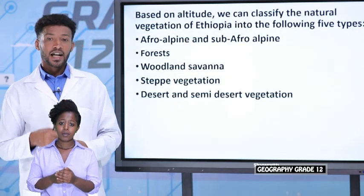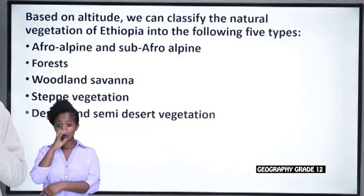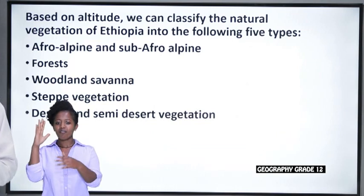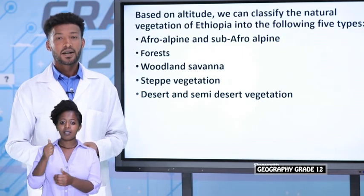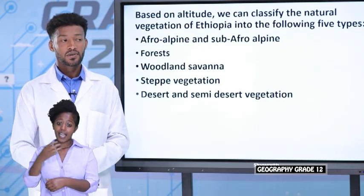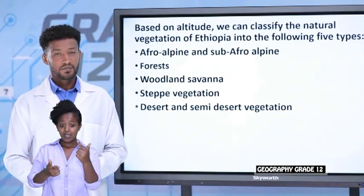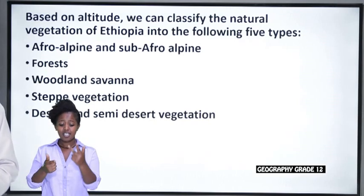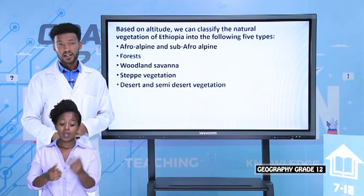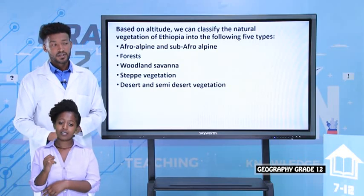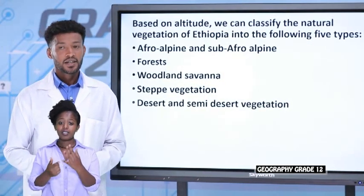Based on altitude, we can classify the natural vegetation of Ethiopia into five big categories. These are: afro-alpine and sub-afro-alpine vegetation, forest, woodland savannah, steep vegetation, and desert and semi-desert vegetation.